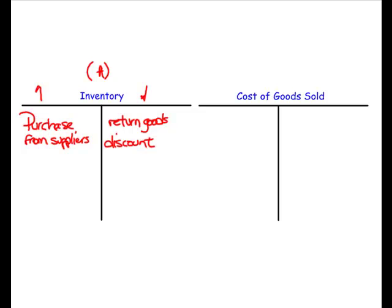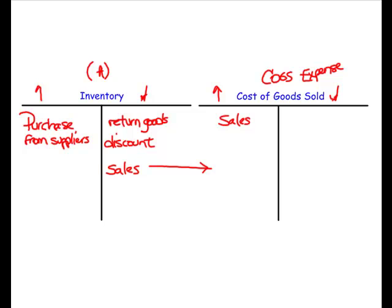Inventory also decreases when inventory is sold to customers. When we make sales to customers, the inventory goes down because that inventory goes home with the customer, and that inventory gets transferred to a new account called cost of goods sold. Cost of goods sold is often abbreviated COGS, and COGS is an expense account. Expense accounts go up with debit and down with credit, so when we debit cost of goods sold, we want that account to go up.